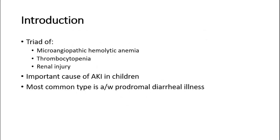Hemolytic uremic syndrome is characterized by a triad of characteristics which include microangiopathic hemolytic anemia — where the capillary walls become weak and thicken causing bleeding — thrombocytopenia where there is a reduction in thrombocytes also known as platelets, and renal injury.